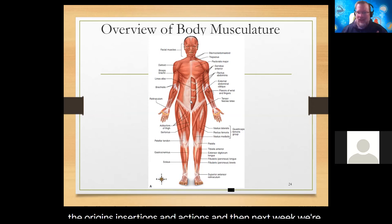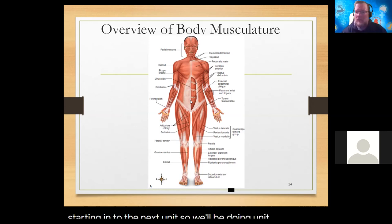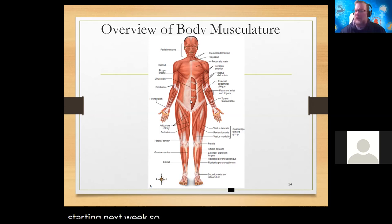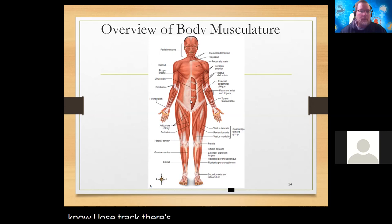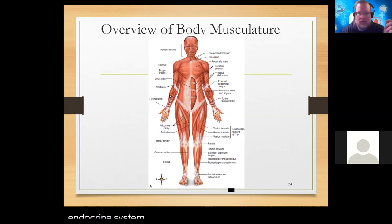Next Tuesday I'll open with discussing the Visible Body portfolio assignment for this unit. Between now and Tuesday, try to get a little bit of a head start - it's not due until the following Tuesday. Next week we're starting the next unit - unit seven - and we'll be getting into either the nervous system or the endocrine system.